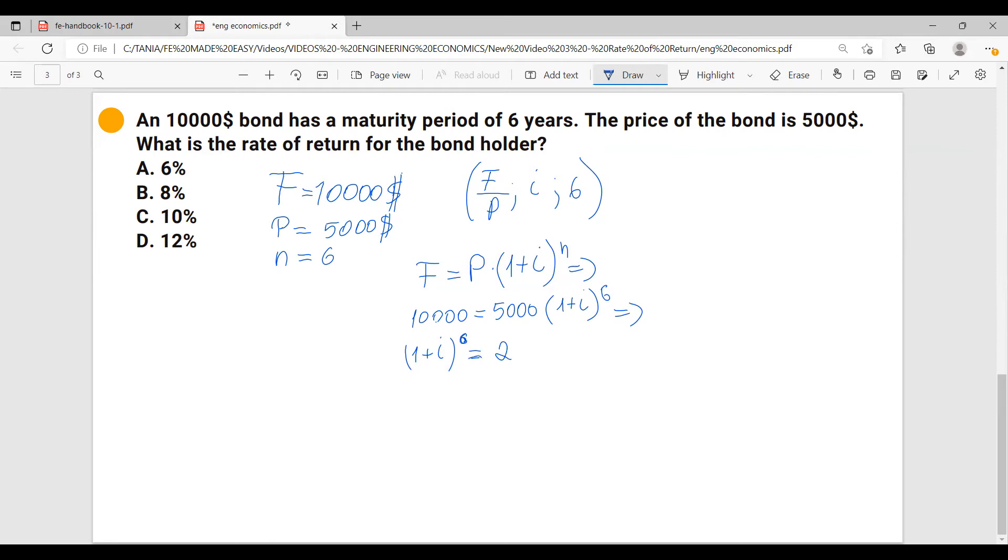An easy way to solve this problem is you have to get this two to a form of n power six. And this is easily done by just doing some trials and error. So I will do 1.12 power six, I get 1.9738.